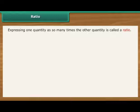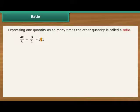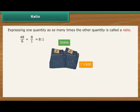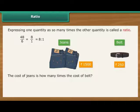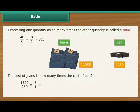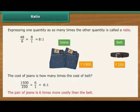Expressing one quantity as so many times the other quantity is called a ratio. 48 divided by 6 is 8 divided by 1. 8 divided by 1 can also be written as 8 is to 1. Colon is the symbol used to denote ratio. For example, Tushar bought a pair of jeans for Rs. 1500 and a belt for Rs. 250. The cost of jeans is how many times the cost of belt? To calculate the ratio, first divide 1500 by 250. It is the same as 6 divided by 1, expressed as 6 is to 1. Therefore, the pair of jeans is 6 times more costly than the belt.